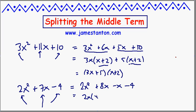Well, the first two terms have become a factor of 2x, x plus 4. The last two terms have become a factor of negative 1, x plus 4. And again, magic occurs, 2x minus 1 times x plus 4.